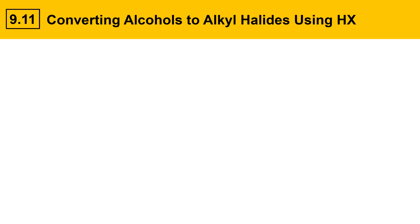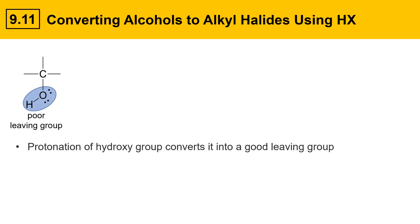Converting alcohols into alkyl halides using a hydrohalic acid like HCl or HBr parallels in a lot of ways dehydration reactions of alcohols, which was covered previously in a video. Here's an example of an alcohol which has a hydroxy group, but hydroxy groups are poor leaving groups. However, protonation of the hydroxy group can convert it into a good leaving group, and that's been a theme of alcohol reactivity with acids.